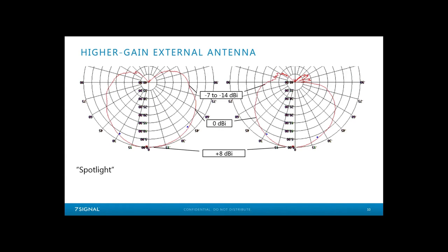A big benefit to something like a patch antenna is not transmitting or receiving much signal from the floor above. When you get back into channel reuse again, you don't want to be putting signal in the floor above, which may cause co-channel interference up there or may cause clients to associate to an AP through the floor — which you probably didn't design for. Lots of benefits from that.